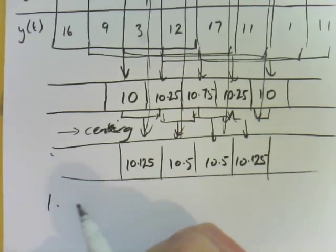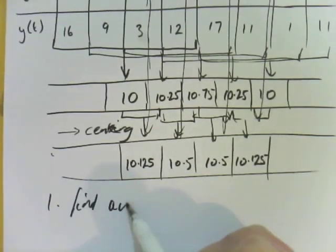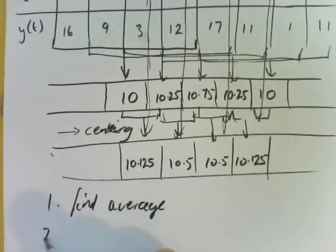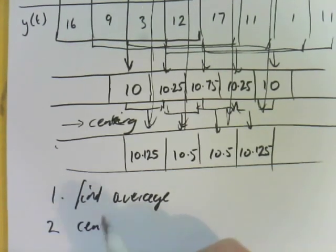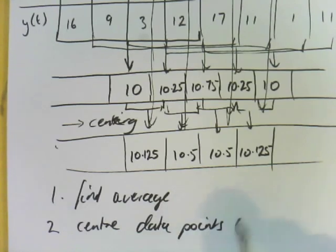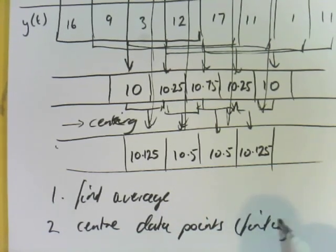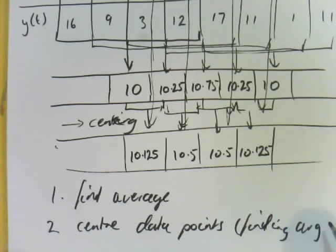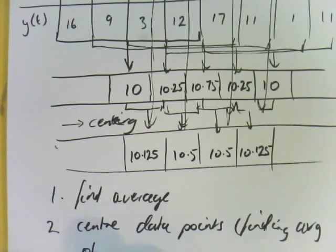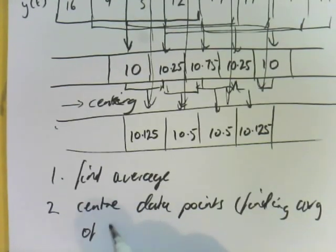So same thing. Step one, find average. Step two, you need to center to the other points. And you do that by finding average of two points.